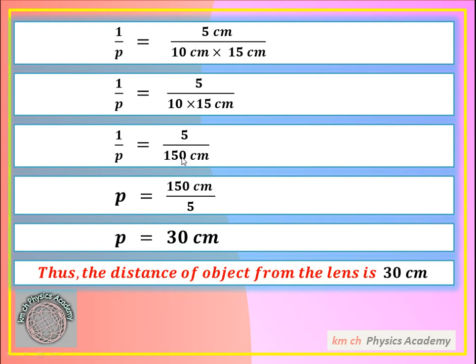So 10 × 15 = 150. Therefore 1/p = 5 over 150 cm. We need P, so P = 150 over 5 = 30 cm.